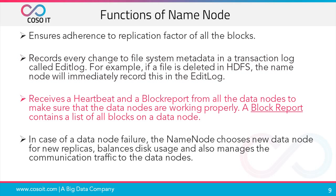The name node periodically receives a heartbeat and block report from the data nodes to make sure they are working properly. A block report can be thought of as a list of all blocks on a data node. If a data node fails, the name node chooses a new data node for new replicas, balances disk usage, and manages the communication traffic to the data nodes.